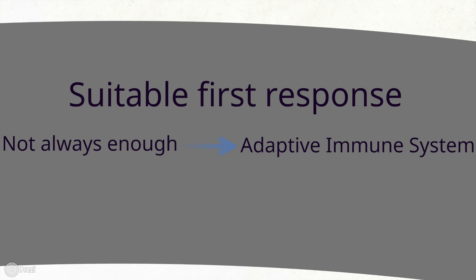Overall, the innate immune system is an appropriate first line of defense; however, it is not always enough. The innate immune system is able to activate the second type of immunity — the adaptive immune response — which is able to recognize pathogens and develop memory for this recognition.